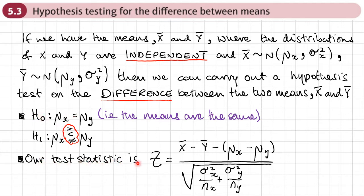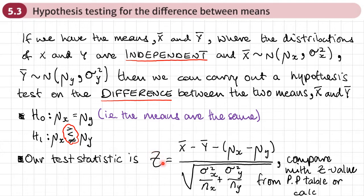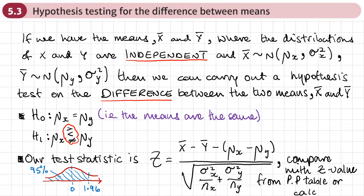We calculate Z using this formula here. You get your critical value — that's going to tell you whether you accept or reject H0 — by comparing this value of Z with the Z value from our percentage points table or from your calculator. We need to remember that these can be upper tail, lower tail, or even two-tail tests, so drawing a diagram might help.